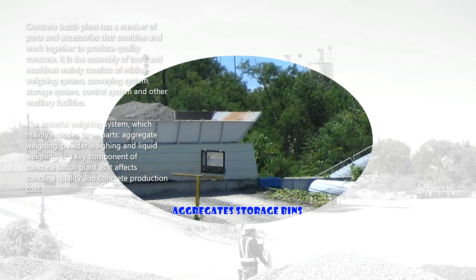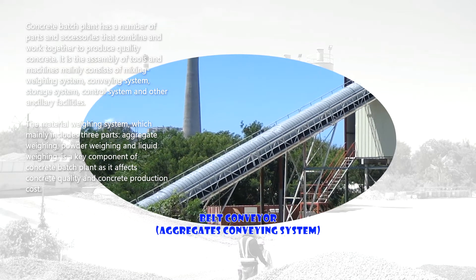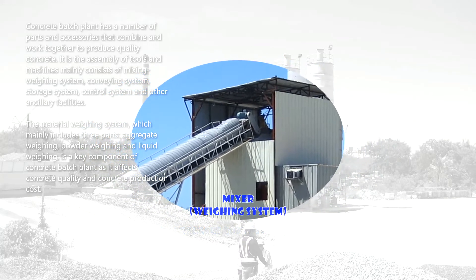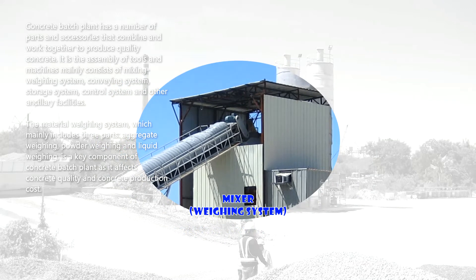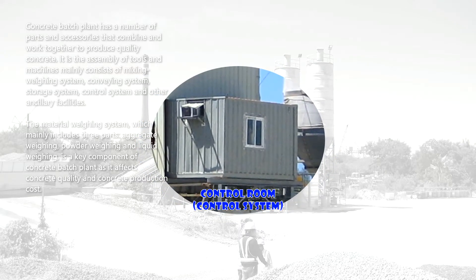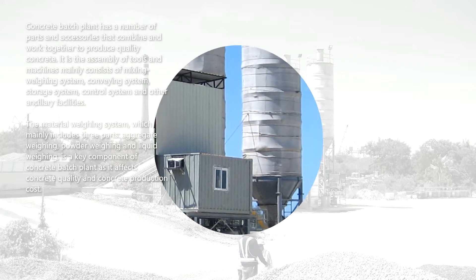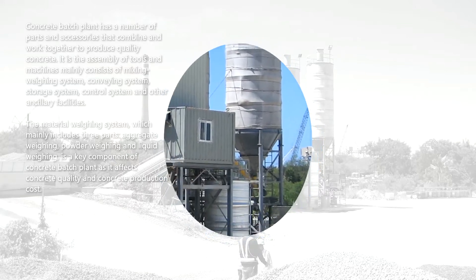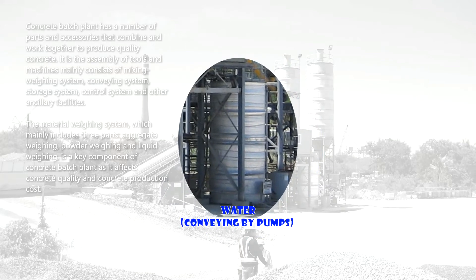A concrete batch plant has a number of parts and accessories that combine and work together to produce quality concrete. It is an assembly of tools and machines that mainly consists of a mixing system, weighing system, conveying system, storage system, control system, and other ancillary facilities. The material weighing system — which mainly includes three parts: aggregate weighing, powder weighing, and liquid weighing — is a key component of the concrete batch plant, as it affects both concrete quality and production cost.